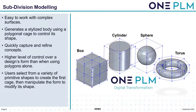Subdivision modeling within Solid Edge makes it easy to work with complex surfaces. The application generates a stylized body using a polygon cage to control its shape, allowing you to quickly capture and refine concepts. This provides a higher level of control over a design's form than using polygons alone. Users select from a variety of primitive shapes — such as box, cylinder, sphere, or torus — to create the first cage, and then manipulate this form to modify its shape. Quite often it's going to be a box, as you'll see in the example we're about to go through.